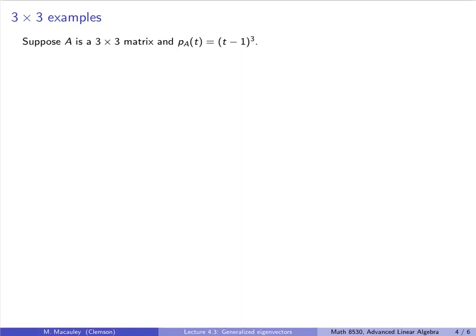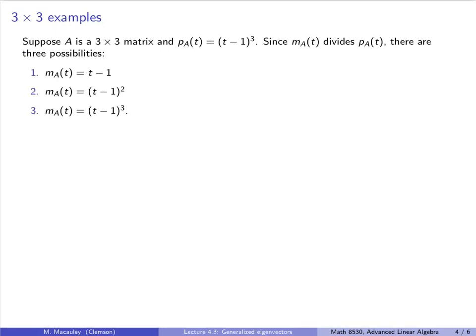Now let's move to the 3-by-3 case. Suppose the characteristic polynomial of A is T minus 1 cubed — a triple eigenvalue of 1. Since the minimal polynomial divides the characteristic polynomial, there are only three possibilities: T minus 1, T minus 1 squared, or T minus 1 cubed. I will give an example of a matrix satisfying each.